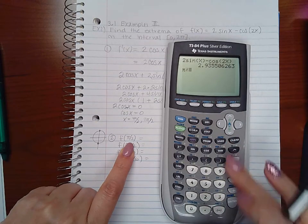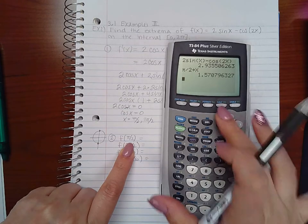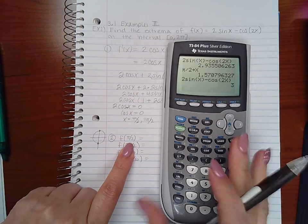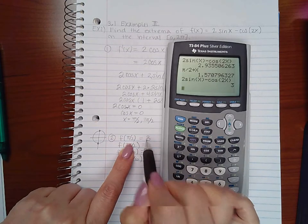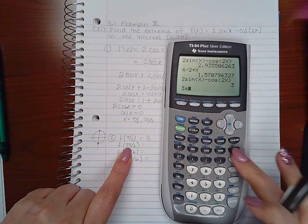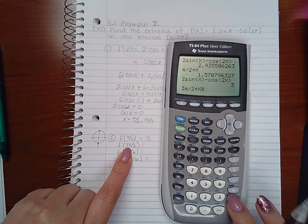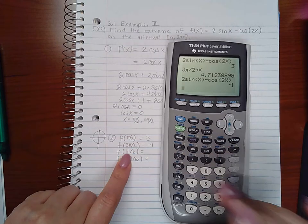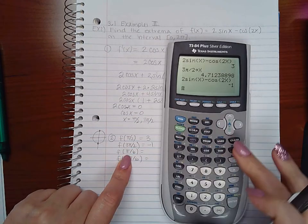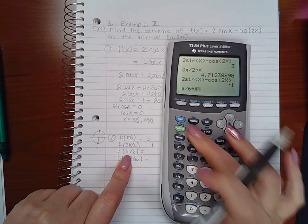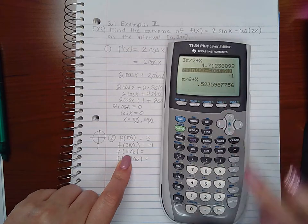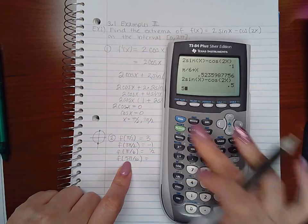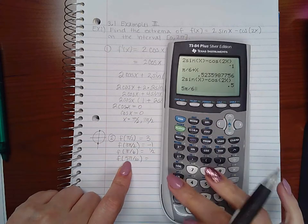So I can go ahead and start plugging in my x values. So π/2 store x then highlight my function hit enter to copy it hit enter to plug it in and I get 3. Now 3π/2 store x and repeat the same process so I get -1. Finally π/6 store x plug it in I get 1/2. 5π/6 store x and I get 1/2.